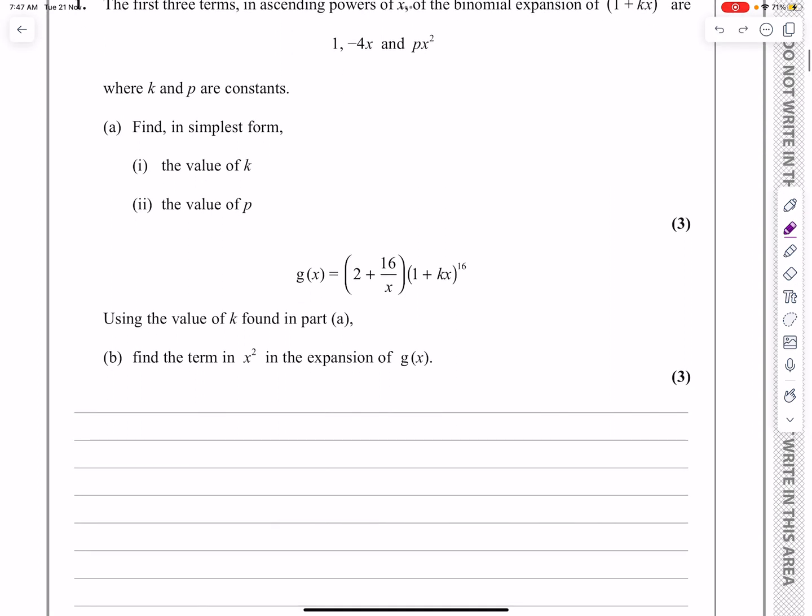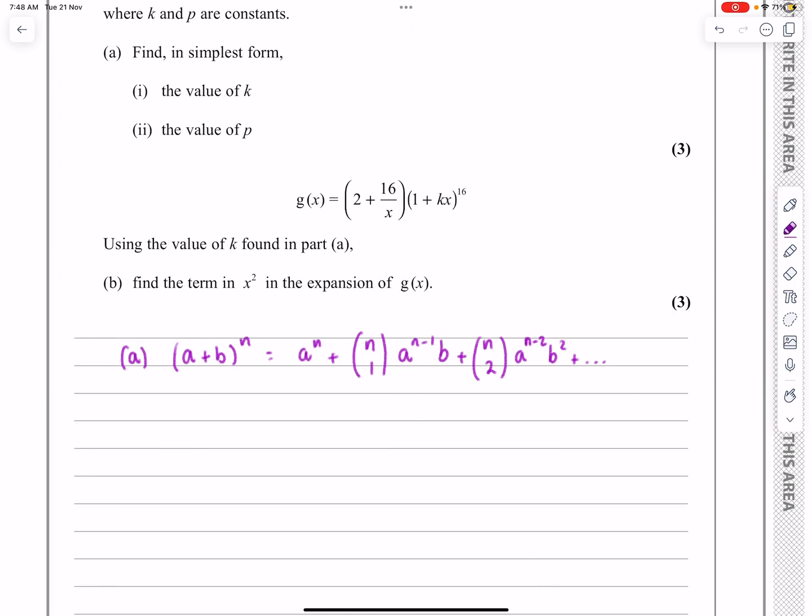So when we're looking at this then, for part a, the binomial expansion in the formula sheet is (a + b)^n equals a^n plus nC1 a^(n-1)b, and it just gets built up. So as we're going through, it'll become nC2, which means it's a^(n-2), the power of a is going down by 1 each time, and the b's match it, so if a goes down by 1, b goes up by 1, but we don't need to go any further than that.